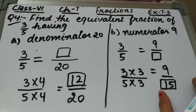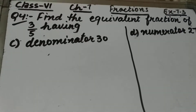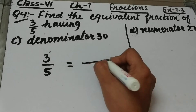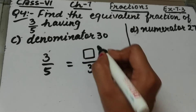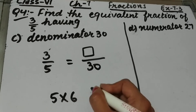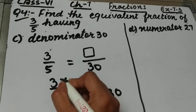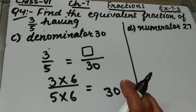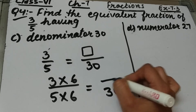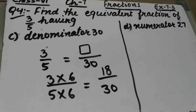5 times 3 is 15, so the equivalent fraction of 3 by 5 having numerator 9 is 9 upon 15. Part c is: find the equivalent fraction of 3 by 5 having denominator 30. We have to find the numerator. If I multiply 5 by 6, I will get 30. I will multiply 3 by 6 as well, because both are equivalent fractions. 3 times 6 is 18, so the equivalent fraction is 18 upon 30.